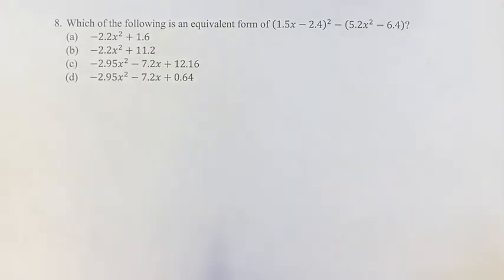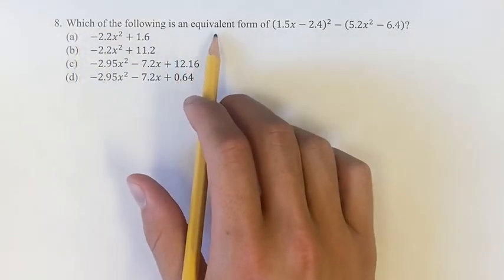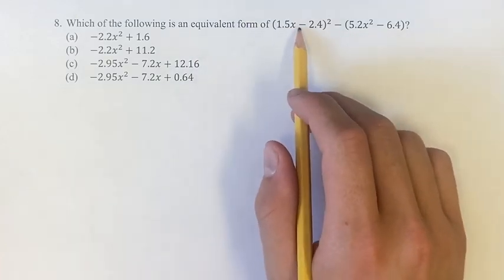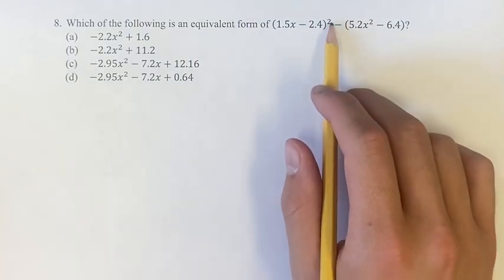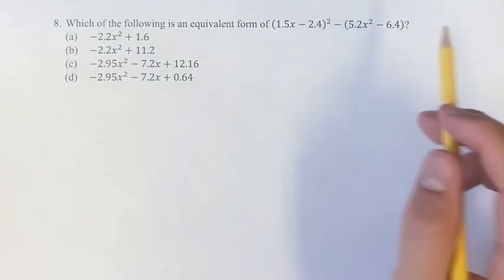Hello and welcome back to another video. In this problem, we're asked which of the following is an equivalent form of 1.5x minus 2.4 squared minus 5.2x squared minus 6.4.